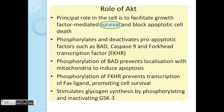The role of AKT in general — the main thing to remember is survival. To survive, cells need to block apoptotic cell death. So AKT phosphorylates and deactivates pro-apoptotic factors such as BAD, which prevents its localization with mitochondria to induce apoptosis.